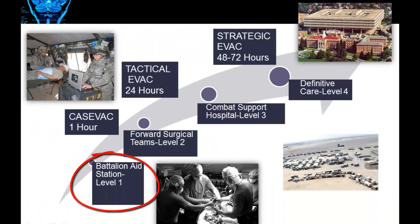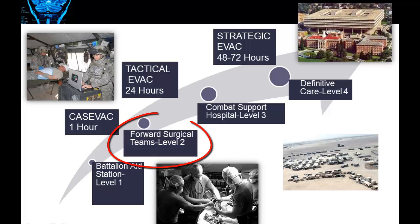Level 1 is the first medical care that a soldier receives, which includes immediate life-saving measures, may include injury prevention, combat stress control preventative measures, and evacuation from units to supporting medical treatment. The major emphasis is placed on those measures necessary to return the patient to duty, or to stabilize them for medical evacuation to Level 2. Level 2, or the Forward Surgical Team, includes evacuating patients from Level 1, and at this level the patient is examined.